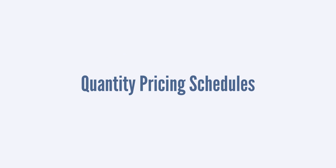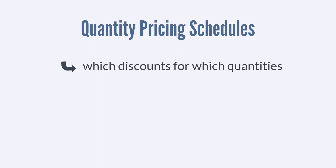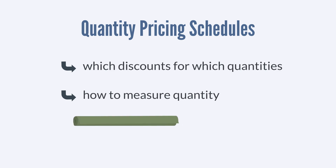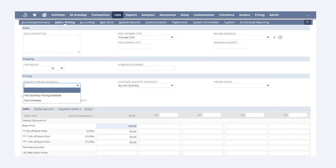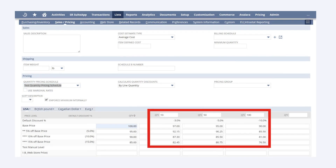As you can imagine, setting up quantity pricing for each item record your company has could be extremely time-consuming. Quantity pricing schedules allow you to build quantity pricing templates that you can quickly apply to any items. When you create a new quantity pricing schedule, you decide what discounts you want to provide for different quantities, and whether you want to measure quantity numerically or by a specific unit — for example, if you sell cloth, you may want to provide discounts for the number of yards of fabric a customer buys. Once you have the pricing schedules you need, simply select the appropriate schedule directly on the item record, and NetSuite will apply your predefined quantity pricing template.